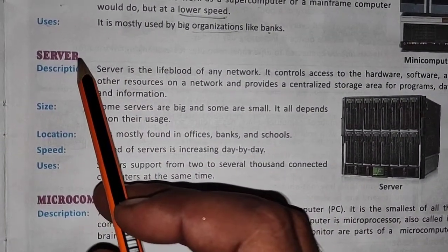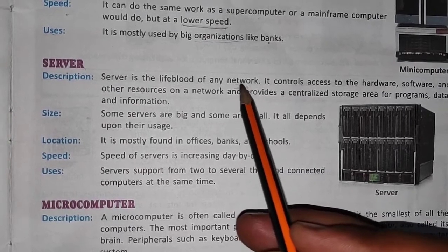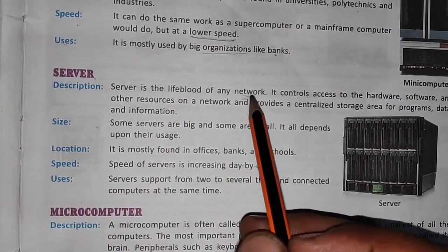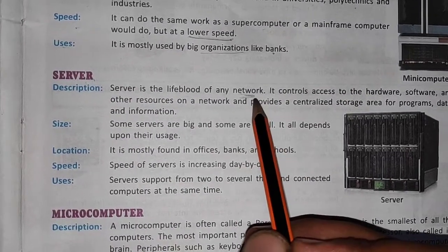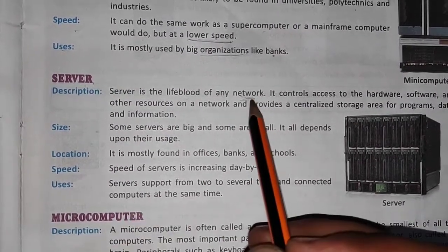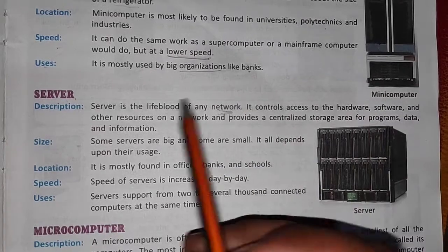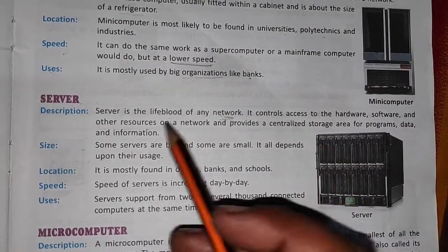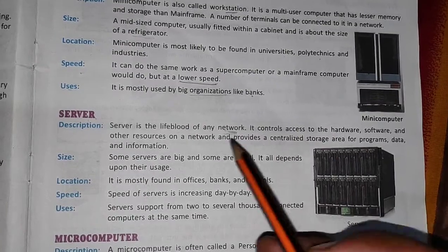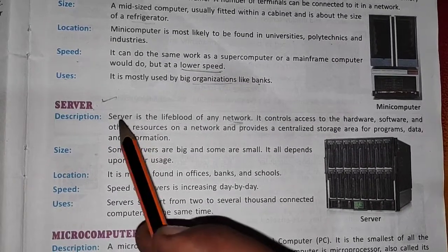Next we have servers. A server is the lifeblood of any network. With the help of a network, other computers can connect to the server, and all the information is provided by the server to other computers. If the server is off, no computer can connect to it or get information. The server controls access to hardware, software, and other resources on the network and provides a centralized storage area for programs, data, and information.